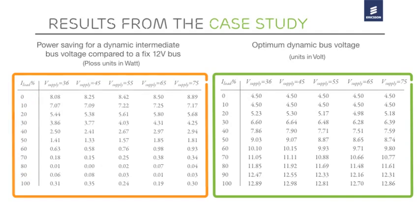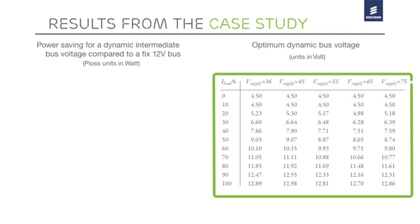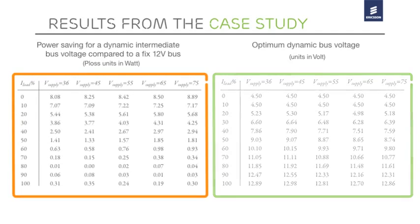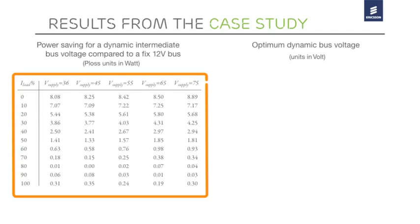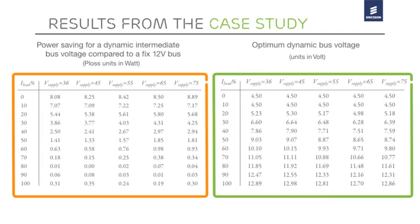This table lists the optimized intermediate bus voltage for each point of the matrix system voltage versus load. Whilst this table lists the power saved when compared to a fixed 12 volt intermediate bus. As you have already seen from the previous graph, the energy saving at low and medium load is impressive. Take for example a case where the input voltage is 45 volts, the system loaded at 30% of its full capacity, and the intermediate bus voltage optimized to 6.64 volts, and compare it to the same condition with the fixed 12 volts intermediate bus voltage. As you can see, the energy saved is equivalent to 3.77 watts,